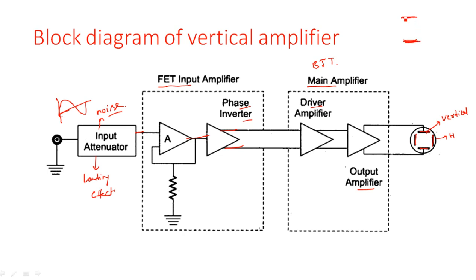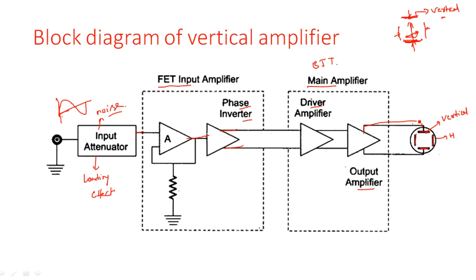The output of the push-pull output amplifier is applied to the vertical deflecting plates. Regarding the naming of deflecting plates — when you see plates oriented horizontally, you might confuse them as horizontal plates, but that is wrong. They are called vertical plates because the electron movement caused by the voltage applied to them is in the vertical direction. Similarly, the horizontal plates cause electron movement in the horizontal direction. The push-pull output amplifier provides one positive and one negative output to these two vertical deflecting plates.